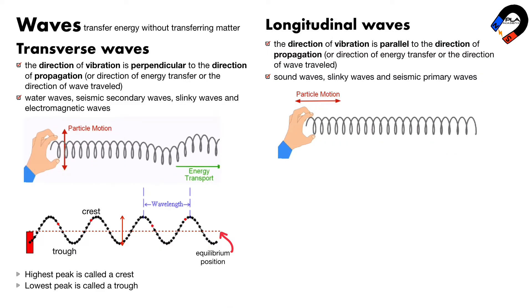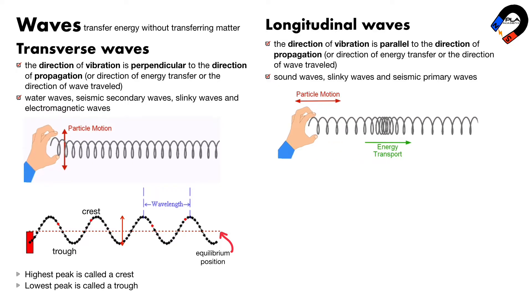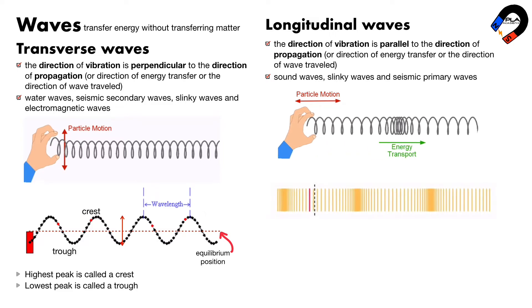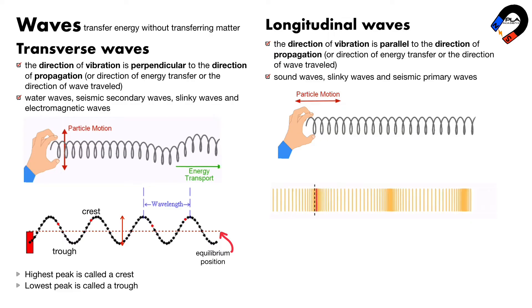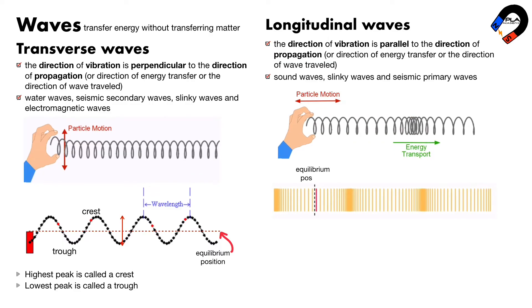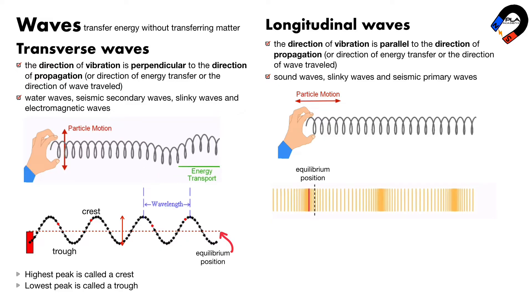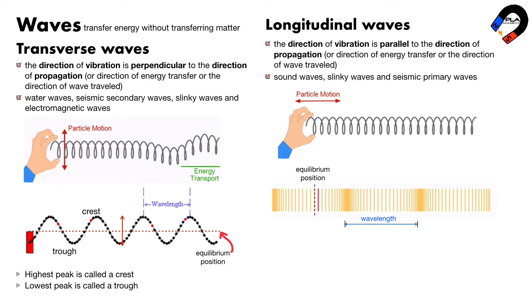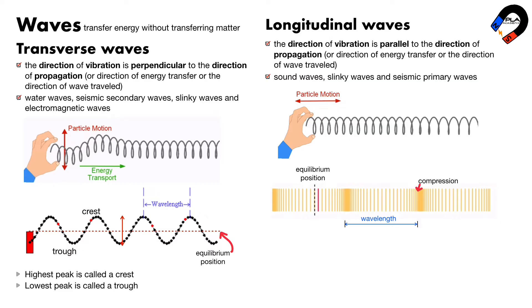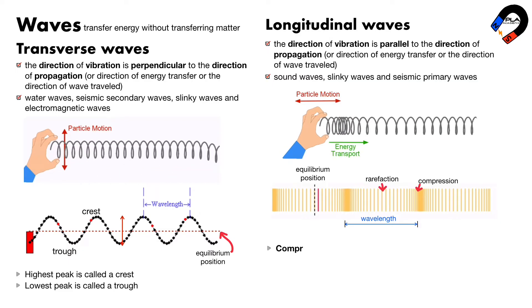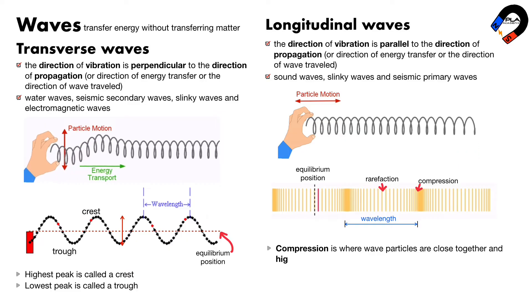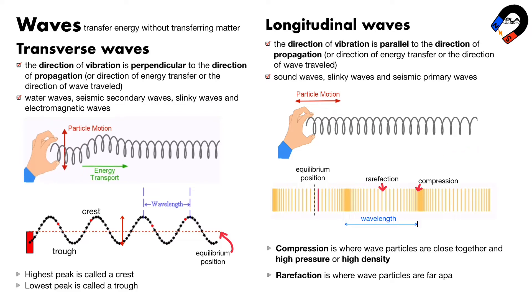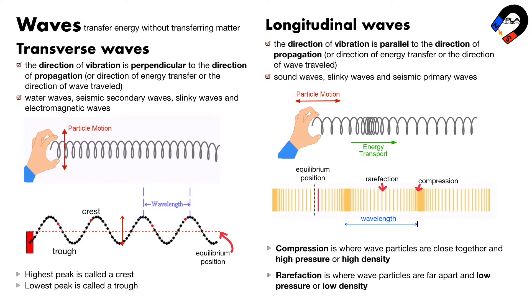The direction of vibration is forward and backward, which is parallel to the direction of wave propagation to the right. The wave vibrates around the equilibrium position. When the wave vibrates for one cycle it creates one wave that travels one wavelength. Where the spring compresses together, this is called a compression. Where the spring extends apart, this is called a rarefaction. Compression is where wave particles are close together at high pressure or high density. Rarefaction is where wave particles are at low pressure or low density.